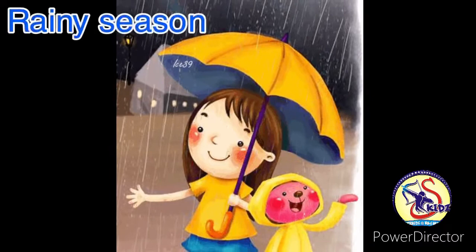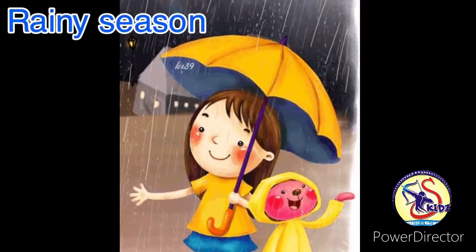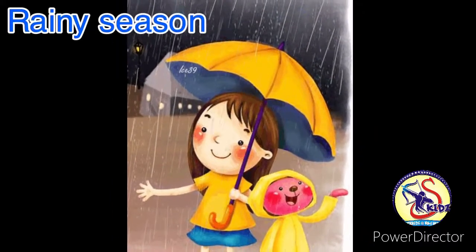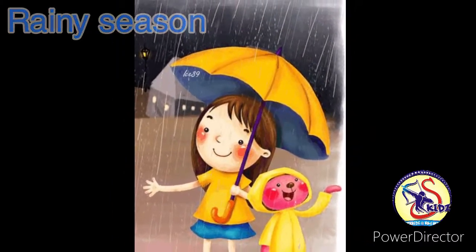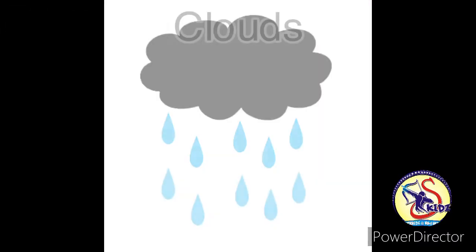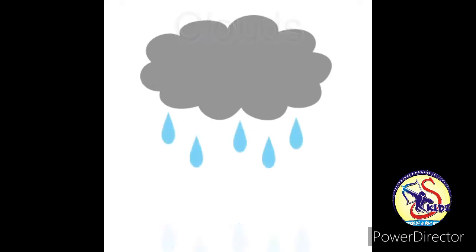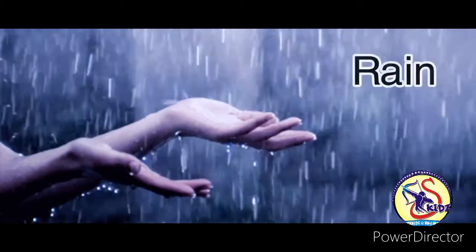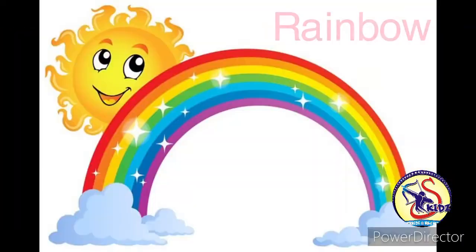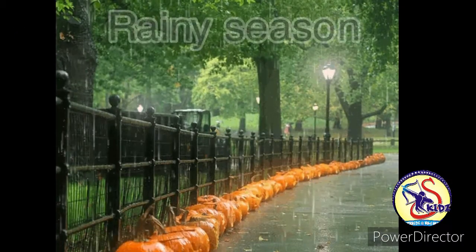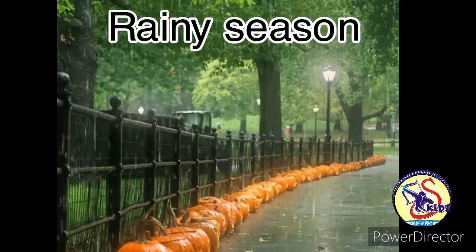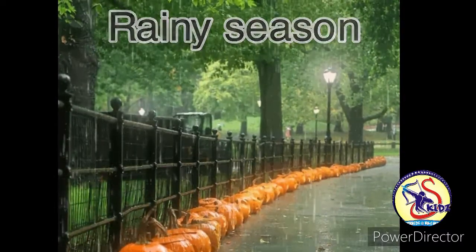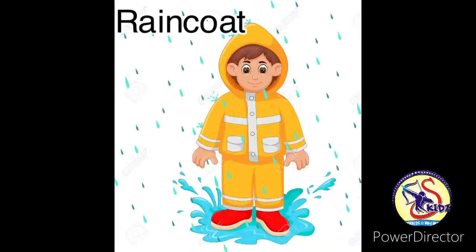Today we will learn about the things we see during the rainy season. We see clouds, thunderstorm, rain, and rainbow during the rainy season. We also use rain wear such as raincoat and gum boots.